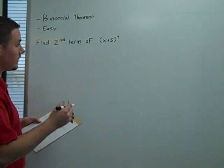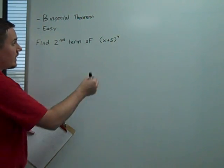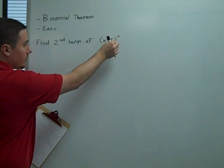Now, in order to do this we need three things: a coefficient, an exponent for x, and an exponent for 5.